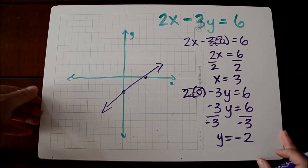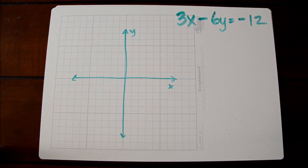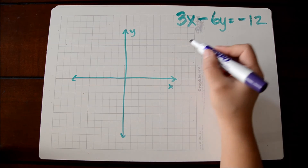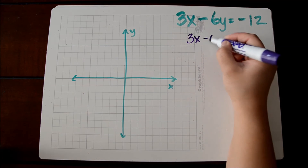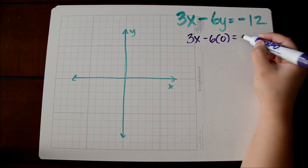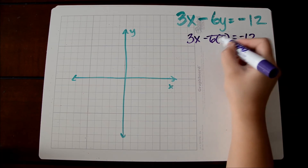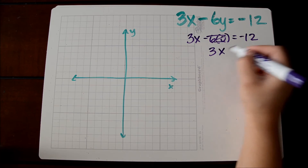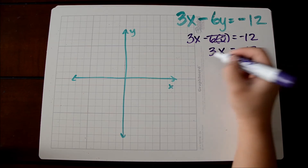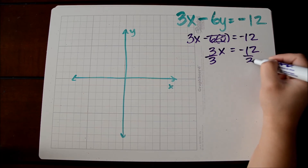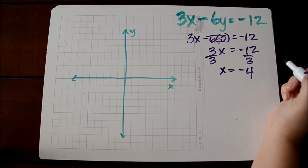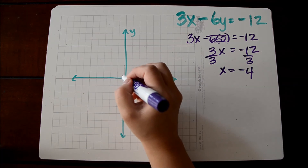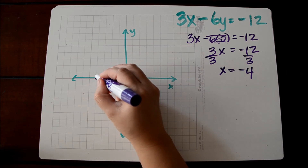Let's take a look at one more example. Again, we have an equation written in standard form. We're first going to find our x-intercept by substituting in 0 for y. So we get 3x minus 6 times 0 equals negative 12. Anything times 0 is 0, so we're left with 3x is equal to negative 12. When we divide to solve for x, we get x is equal to negative 4. So we have an x-intercept at (-4, 0).